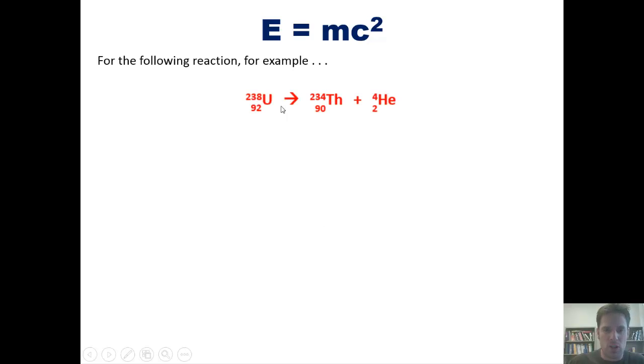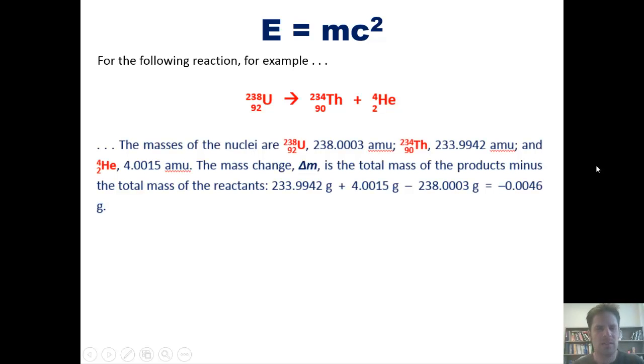For the following equation, the alpha decay of uranium-238 to thorium-234, for instance, the mass of the nuclei are uranium-238 being 238.0003 AMU, thorium-234 being 233.9942 AMU, and helium-4, the alpha particle, being 4.0015 AMU. The mass change, or delta M, is the total mass of the products minus the total mass of reactants, which is this number plus that number.